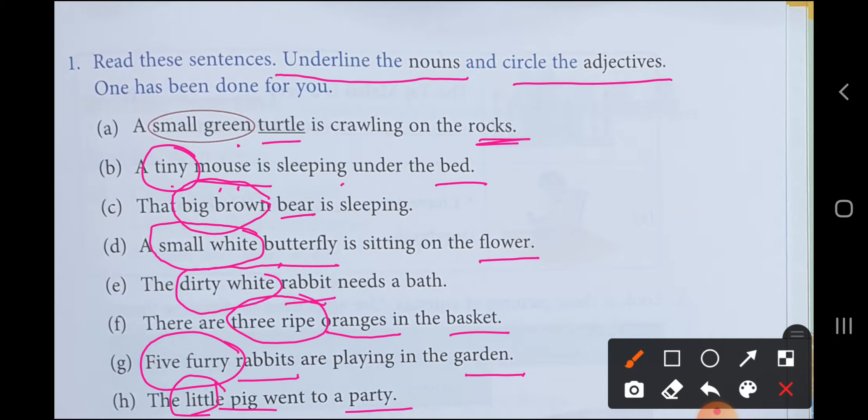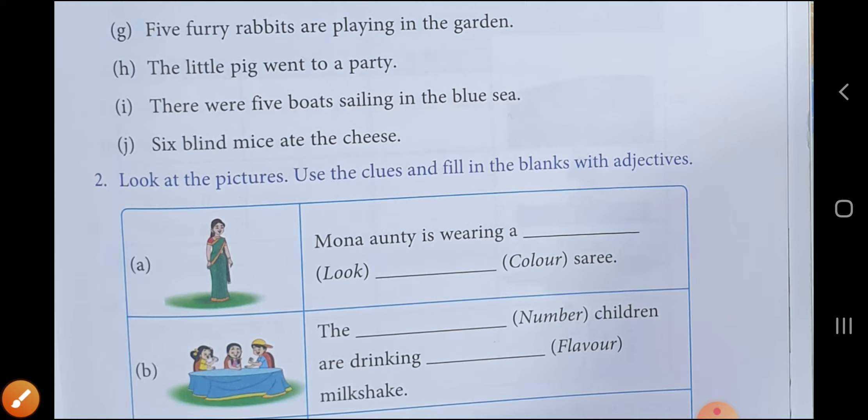What you have to do? You have to find out the noun first. First find the noun, then check what word is with the noun. How is the noun? How many? The number of nouns? So we get to know the adjective. This way we'll know the adjective.